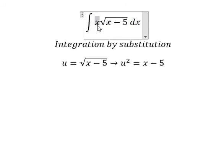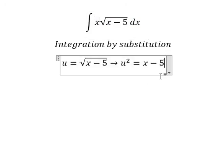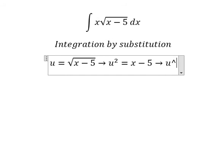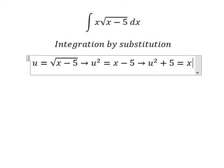Because we still have x, so we put negative 5 to the left. And we have u² + 5 = x.